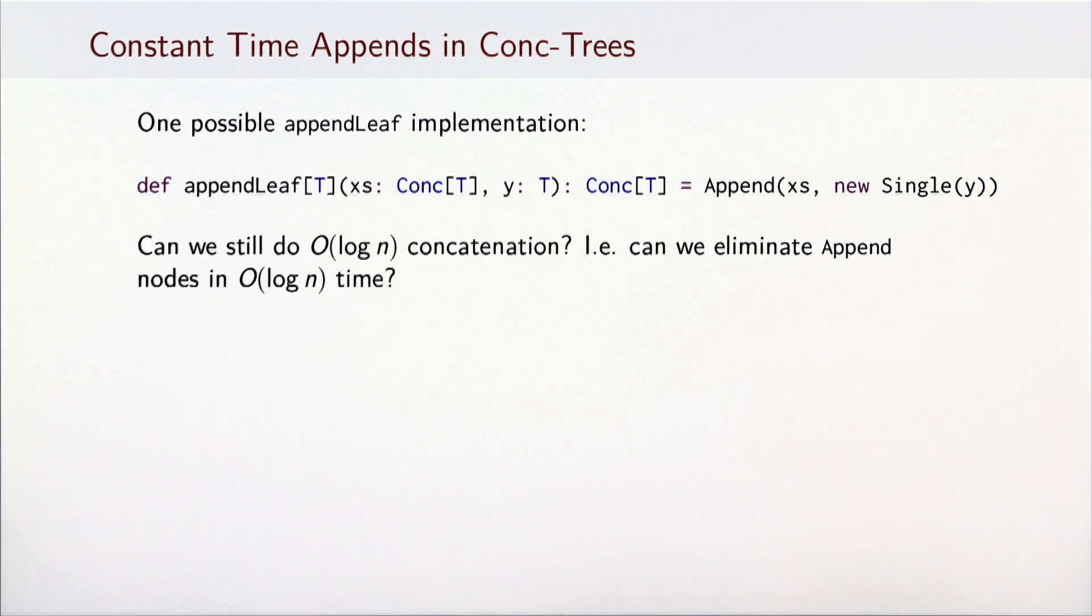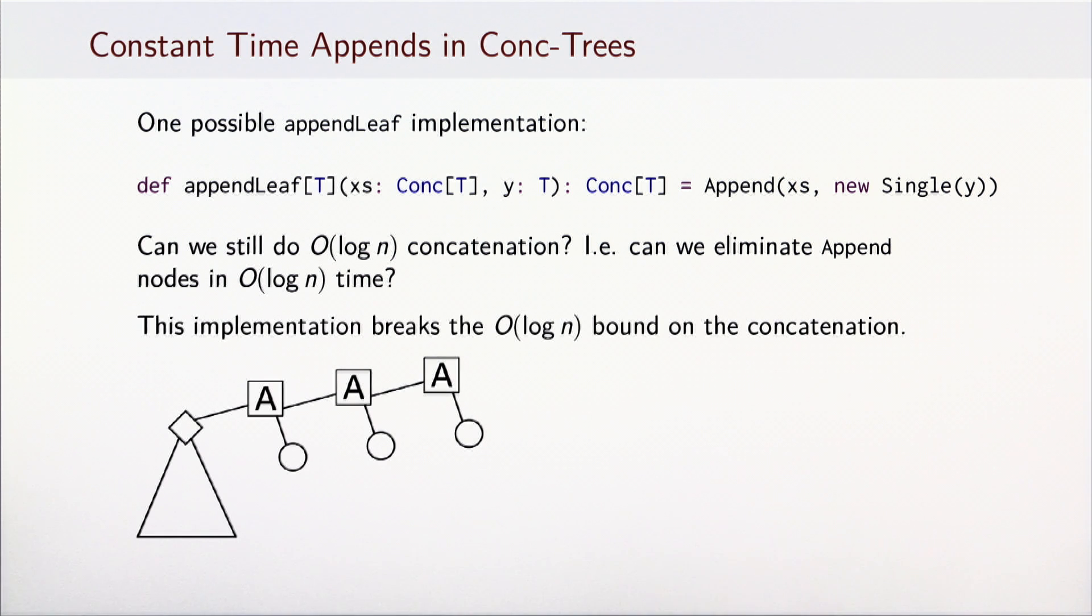Unfortunately, a tree created this way is obviously imbalanced. If we are to later use it for parallelism or concatenations, we need to somehow transform the data structure back into a format that does not have any Append nodes. Question is, can we do this reasonably quickly, for example, in logarithmic time? We claim that this is not possible, and here is why.